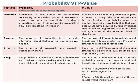Whereas, p-value can be defined as the probability of a point estimate occurring if the hypothesized value is true. P-value, or probability value, is a number describing how likely it is that your data would have occurred by random chance, given that the null hypothesis is true. In simple words, p-value is the observed level of significance.